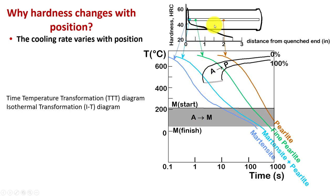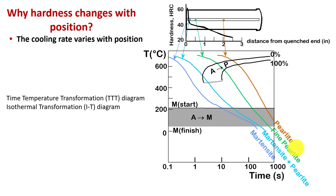If I cool it slowly and let it go through the trajectory, it's going to come through and become from austenite to pearlite. If I go on down through these lines, it's going to be a pearlitic structure. It's going to look like a fingerprint when I look under the microscope versus the white feathery martensite.